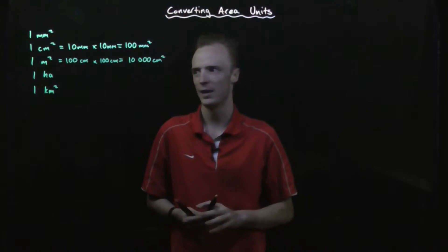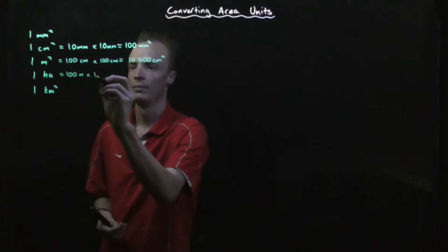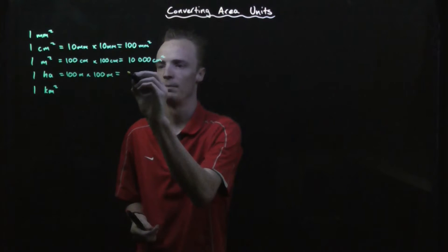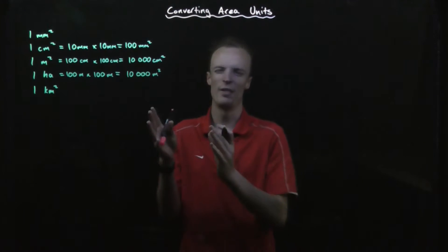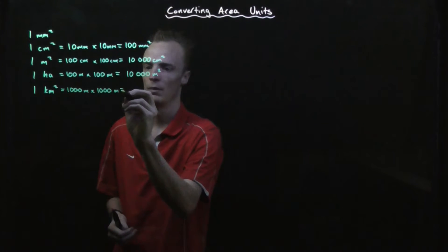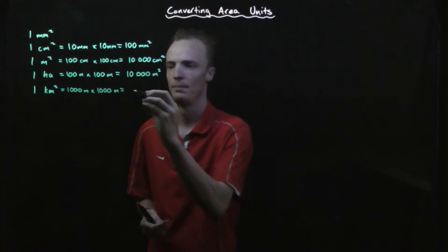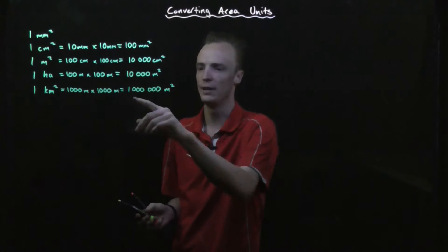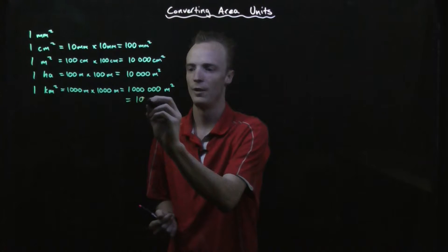In one hectare, that is one hundred metres by one hundred metres, so the number of square metres in a hectare is equal to ten thousand. In one square kilometre, that's one thousand metres by one thousand metres, so in one square kilometre there's one million square metres, which means one square kilometre equals one hundred hectares.